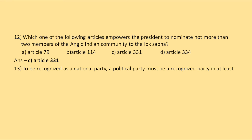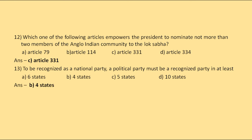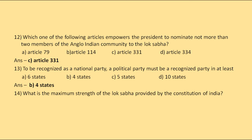To be recognized as a national party, a political party must be a recognized party in at least how many states? The options are 6 states, 4 states, 5 states, or 10 states. The correct answer is 4 states.